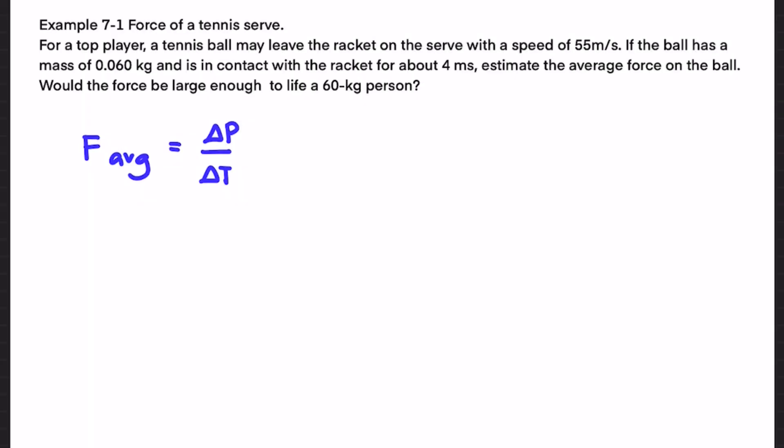Okay, so we're going to do the example question where after reading the question, we can identify that we need to use the f average formula of f equals delta p divided by delta t. Then we can simplify delta p into mv2 minus mv1 divided by delta t.